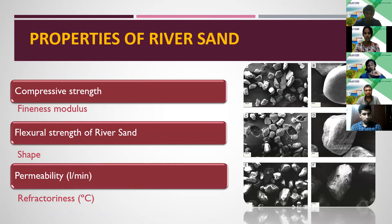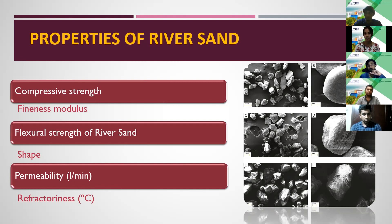When it comes to the properties of river sand: compressive strength, fineness modulus, flexural strength, shape, permeability, and particle thickness. The compressive strength test is the most important, defined as the capacity of concrete to withstand load before failure. The fineness modulus of sand affects the compressive and flexural strength of concrete. Sand can also have different particle size distributions and different shapes.